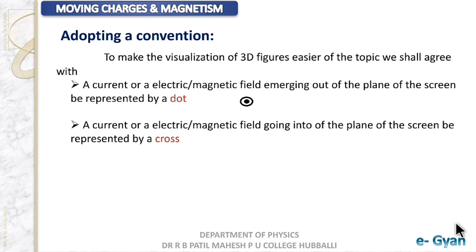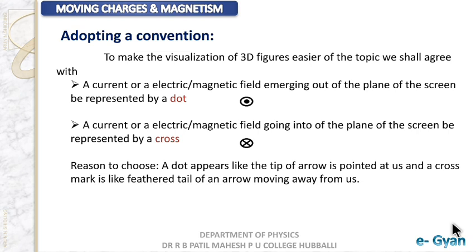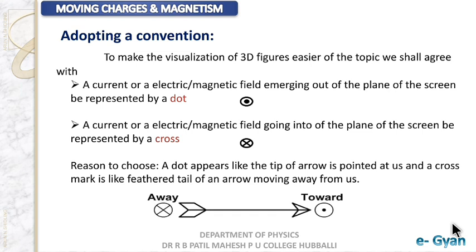If the field or current is going into the screen, we represent it by a cross mark. The reason is that the dot appears like an arrow tip pointed towards us, and the cross mark appears like the tail of an arrow moving away from us. You can see this in the image where the pointed arrow comes towards us and the tail goes away.